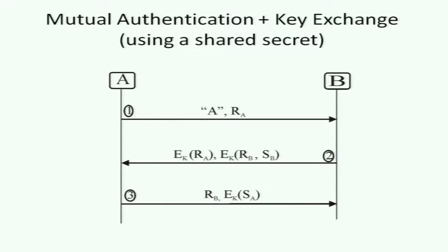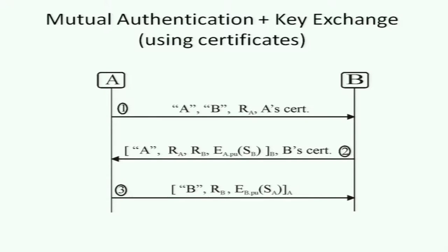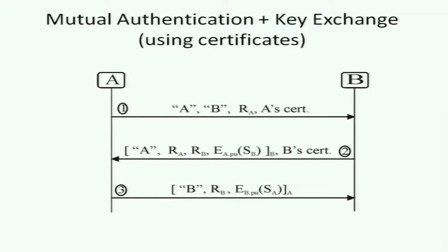S_A concatenated with S_B gives the final session key. Similarly, in certificate-based mutual authentication plus key exchange, both identities are included for safety. B's contribution S_B to the session key is encrypted with A's public key: E_{A.pub}(S_B), so only A can recover it.